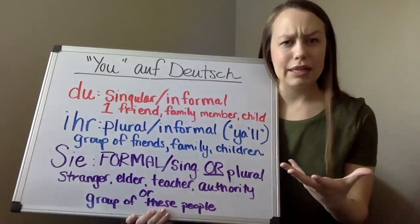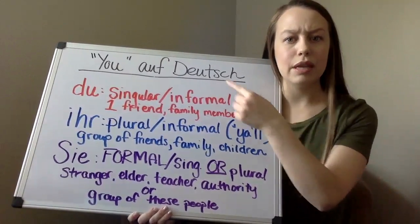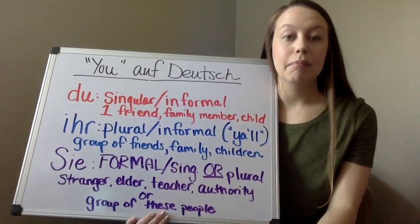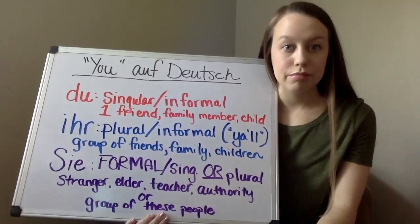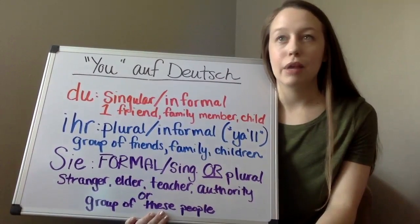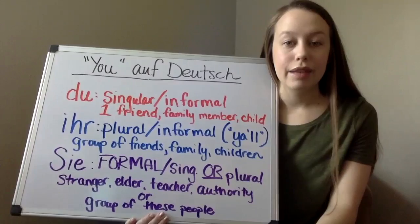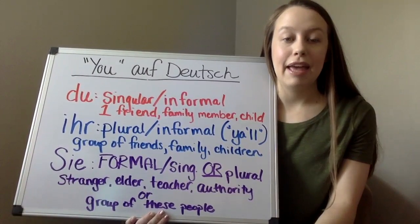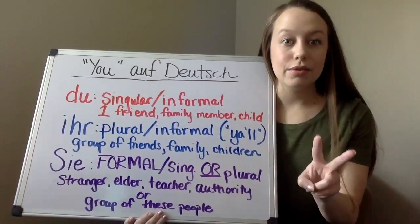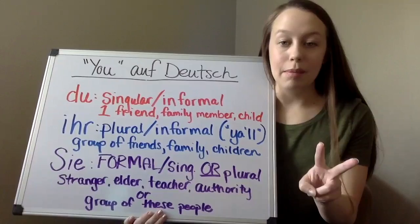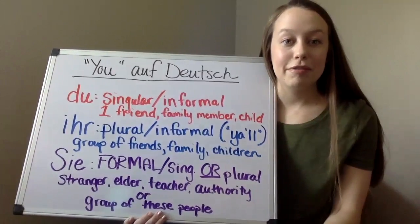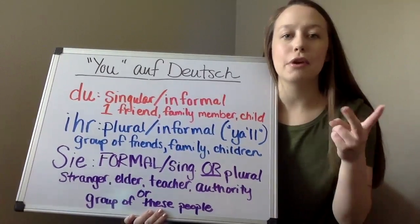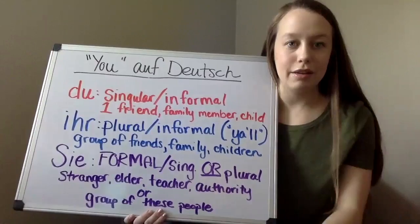So let me give you an example. For 'du,' someone I would command would be my little sister or my best friend Kara. With 'ihr,' I could command two of my little sisters together to do something, or a group of friends — so it could be my friends Kara, Sophie, and Maria.